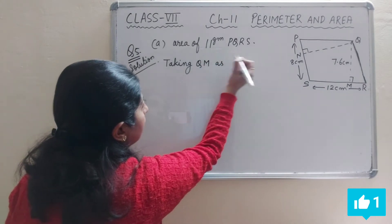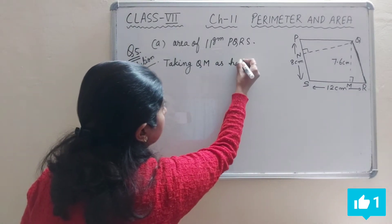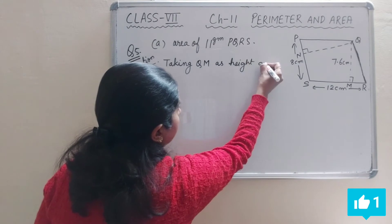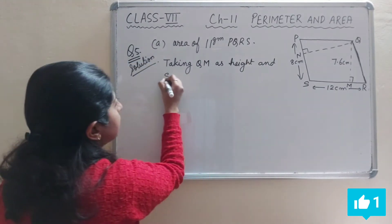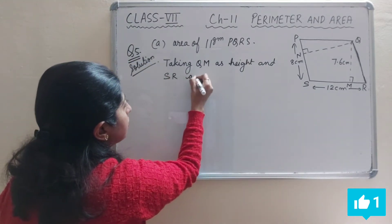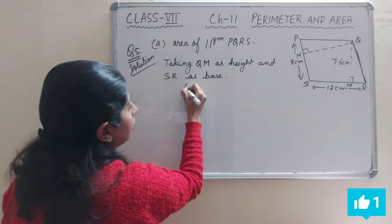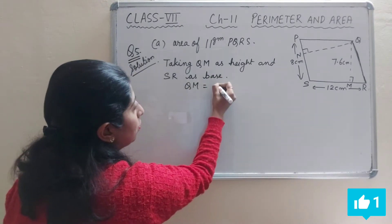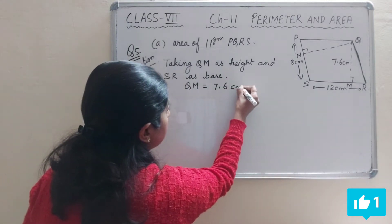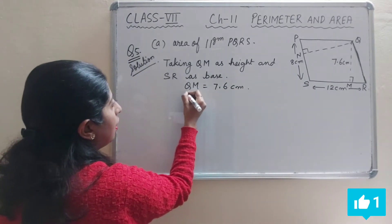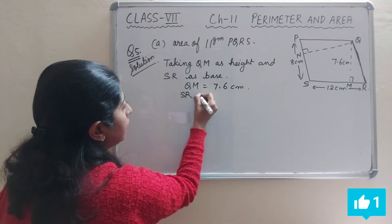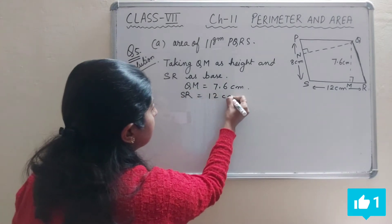First of all we will write here: taking QM as height, where QM is equal to 7.6 centimeters and SR is equal to 12 centimeters.